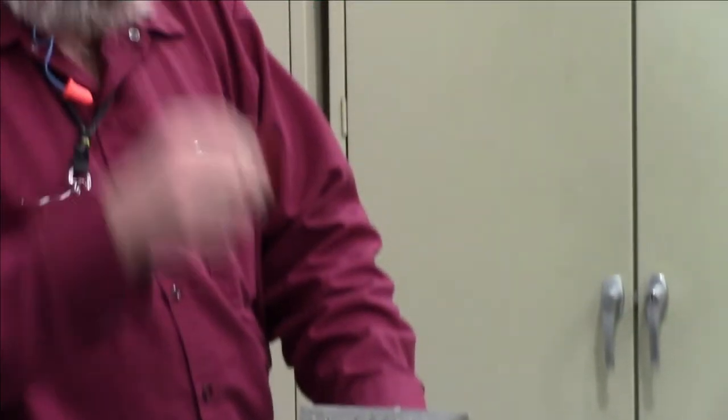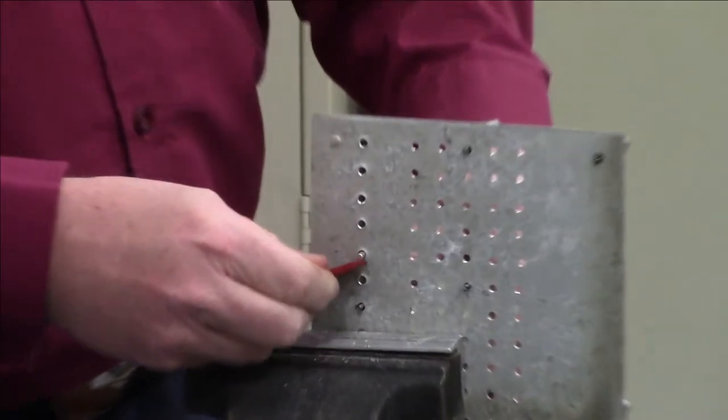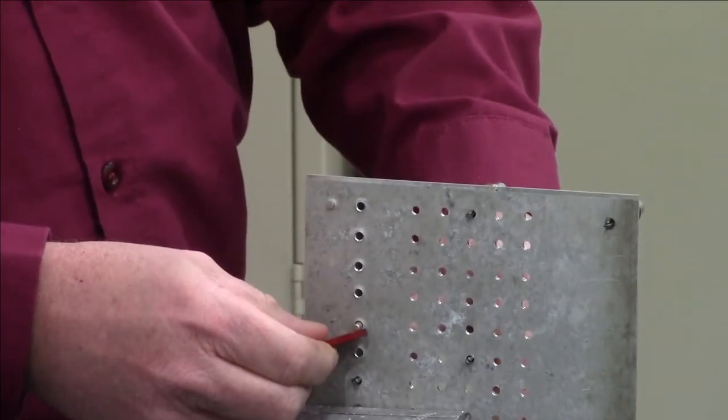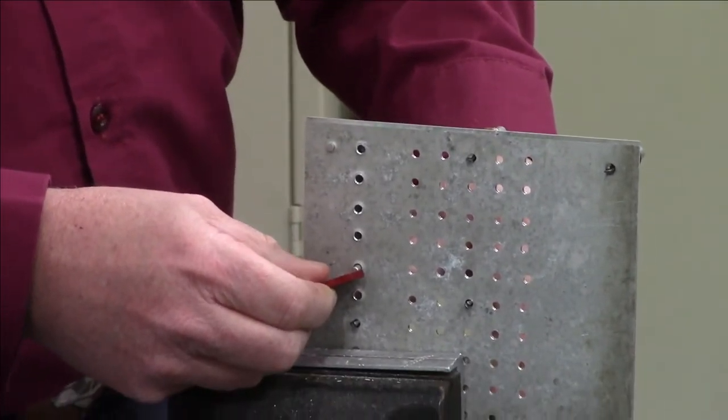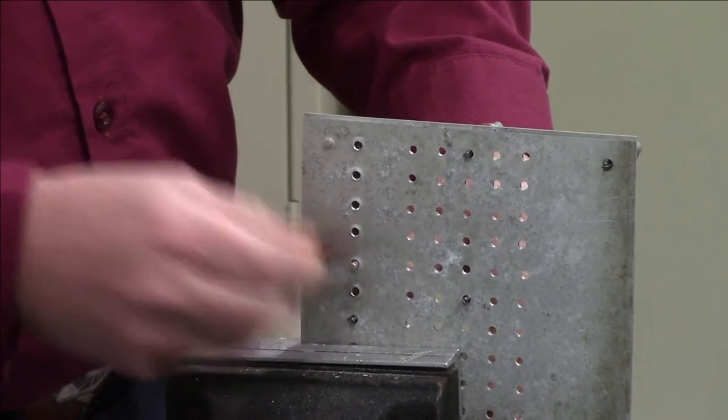A half times the diameter of this rivet is what you need to have sticking out the back. This gauge does that for you, okay? So, that is right on. I cannot see anything through the gap there, so it's perfect.